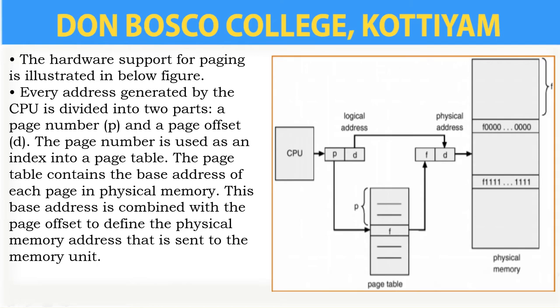The page number will be sent to the page table as an index. By combining the base address — that is the physical memory base address — and the offset value, the physical memory address is defined. The page table contains the physical memory base address, and combining it with the offset value gives us the physical memory address.